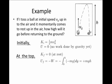At the top of the arc here, the ball will come to a rest, and therefore, the kinetic energy Kf will equal zero. The final potential energy, which will equal the negative of work done by gravity, will be the negative of the integral from zero to h of negative mg dy, which equals mg times h.